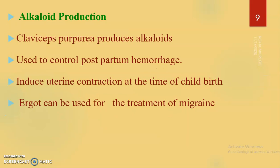Alkaloid production: alkaloids are widely used for various purposes, mainly for medical purposes. For example, Claviceps purpurea is capable of producing ergot and several other alkaloids. These can be used for controlling postpartum hemorrhage, for inducing uterine contraction at the time of childbirth, and also for the treatment of migraine.